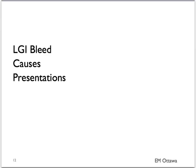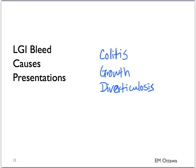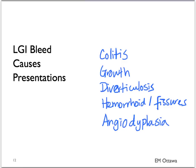In summary, in this segment we discussed the causes and presentations of lower GI bleed. They can be from colitis — either from inflammation, infection, or ischemia — from growth like a cancer, from diverticulosis, or from hemorrhoids and fissures. They can also be from angiodysplasia. Please refer to part three when we talk about the investigation of patients with GI bleed. Thank you for watching.